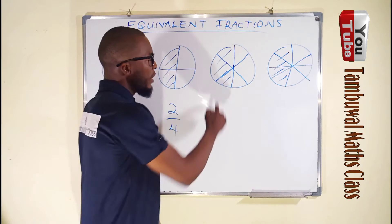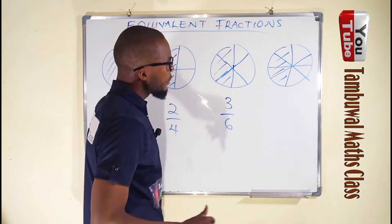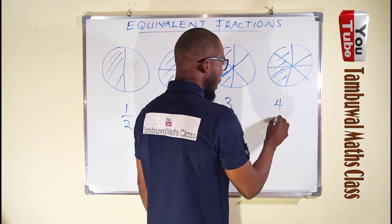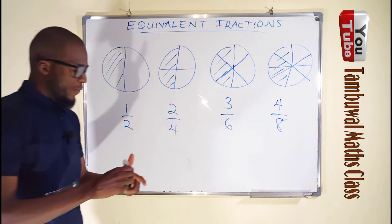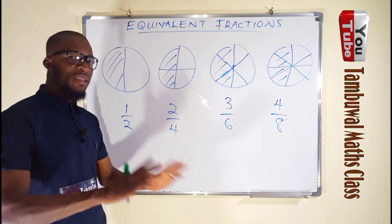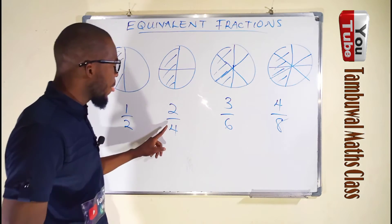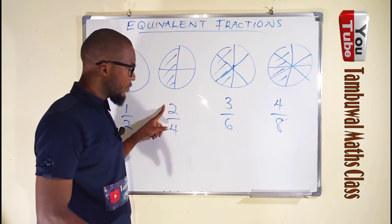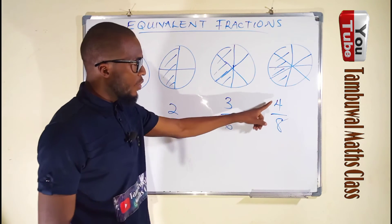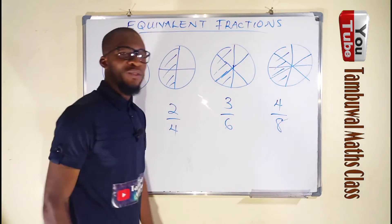We have shaded two parts out of four, so we have two over four. Here we have partitioned the circle into six and shaded three out of six — so three over six. Here we have partitioned the circle into eight parts and shaded four of them — so four over eight. But if you look at all four fractions, they are said to be equivalent because they have exactly the same ratio: the denominator is always two times the numerator.